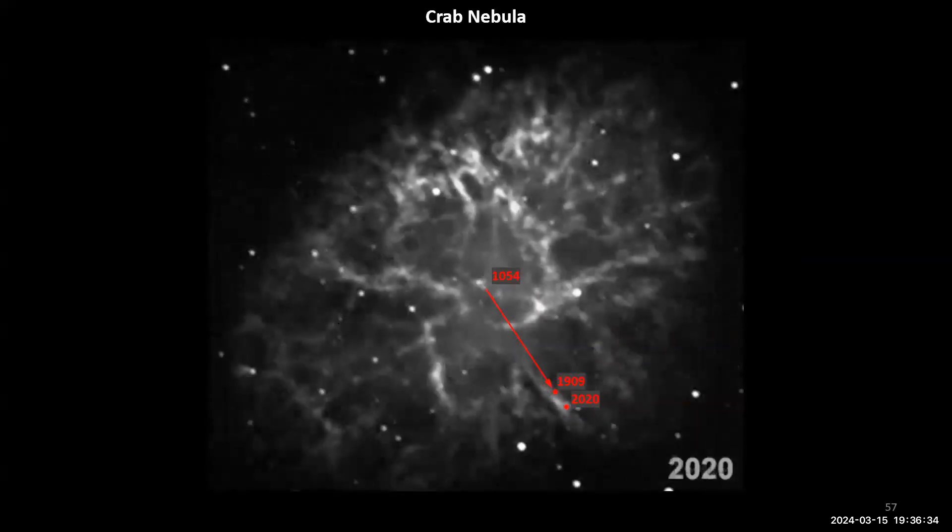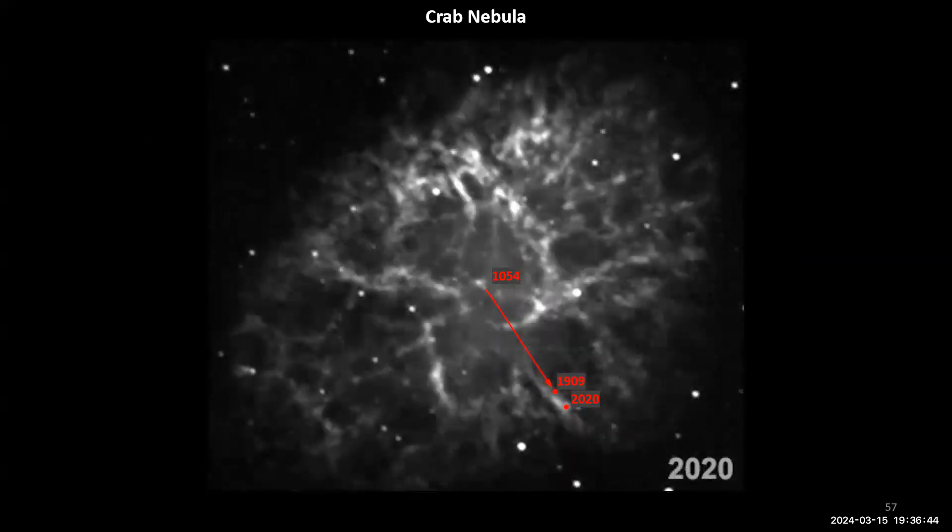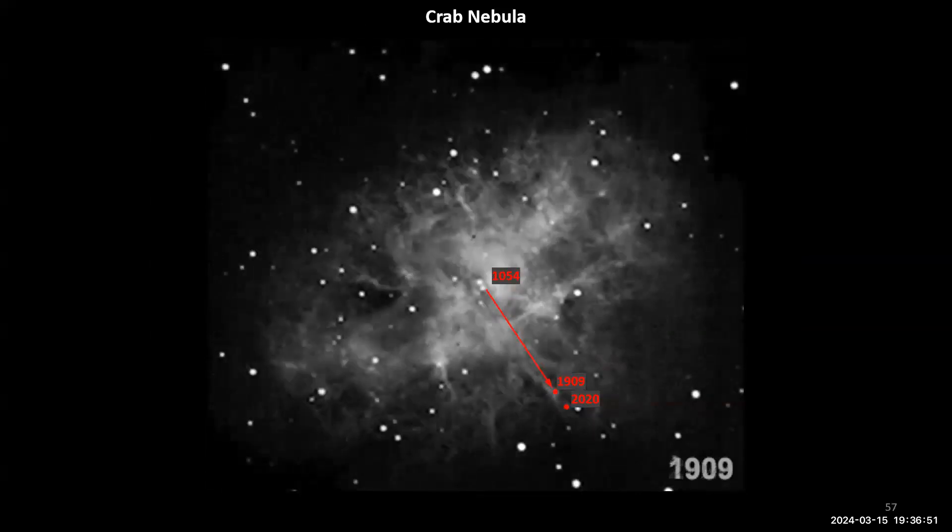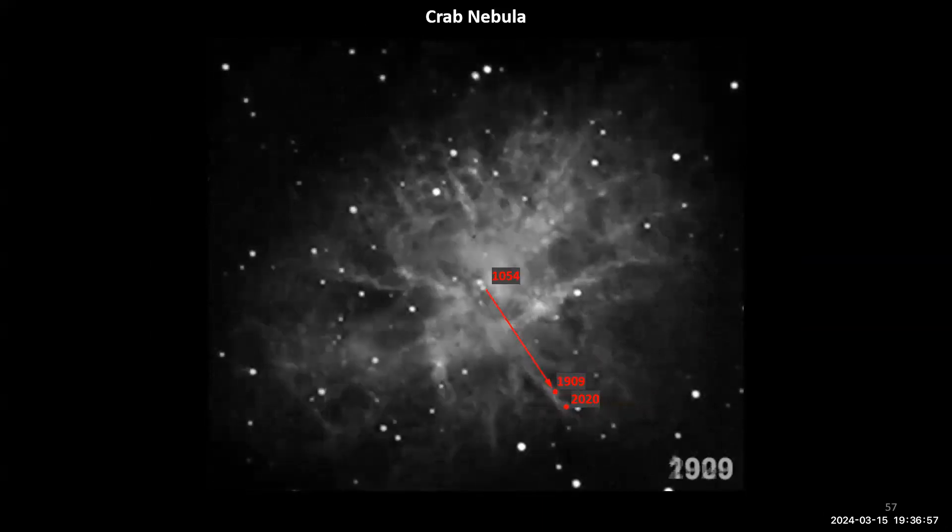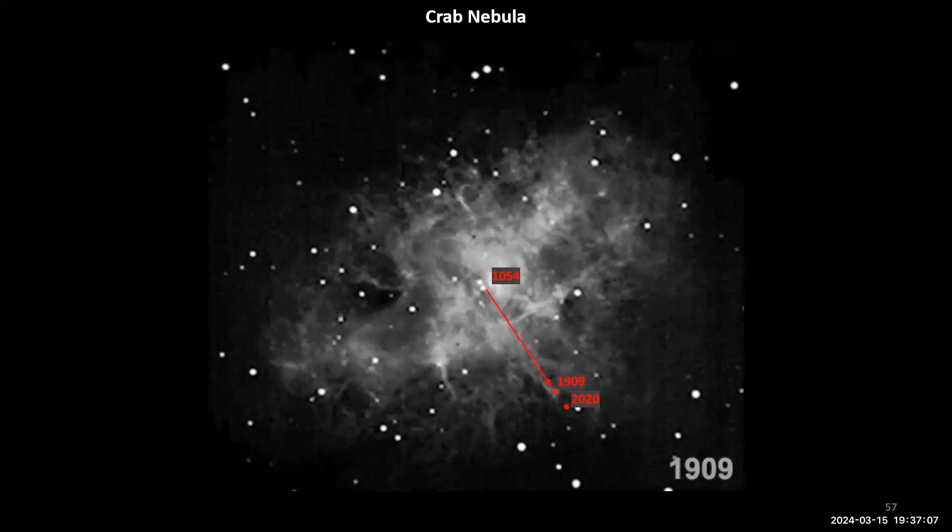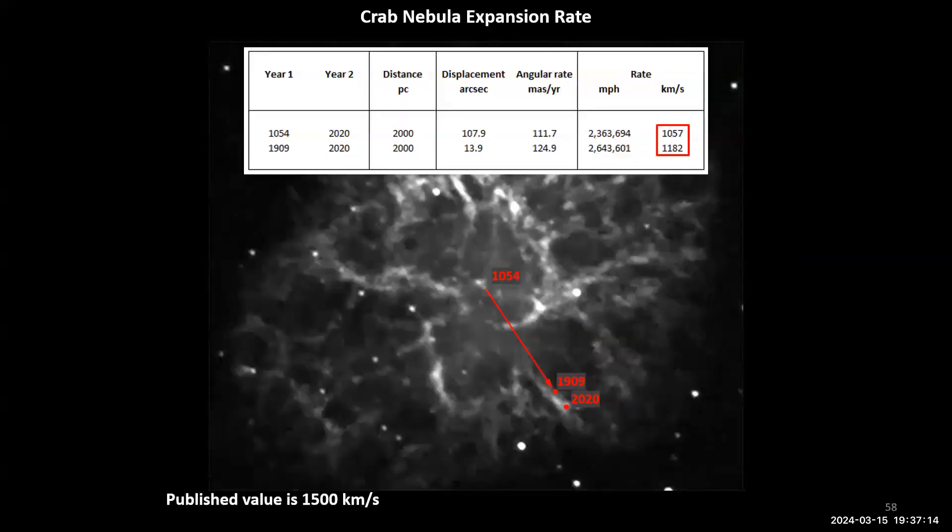Finally, the Messier 1. I did exactly the same type of exercise and didn't do quite as well with the results. Here's a 1909 image of it. And then my image from 2020. And we're going to use a feature that's there that expands out to there between those two years and try to calculate the velocity. Like, how much has it expanded? Angularly, we know the distance. Should be able to figure out what the velocity is. And then we can even use 1054 when the supernova that created the supernova remnant that we observe today in the Crab Nebula. We can use that distance and try to get the velocity from it. And so I did it both ways.